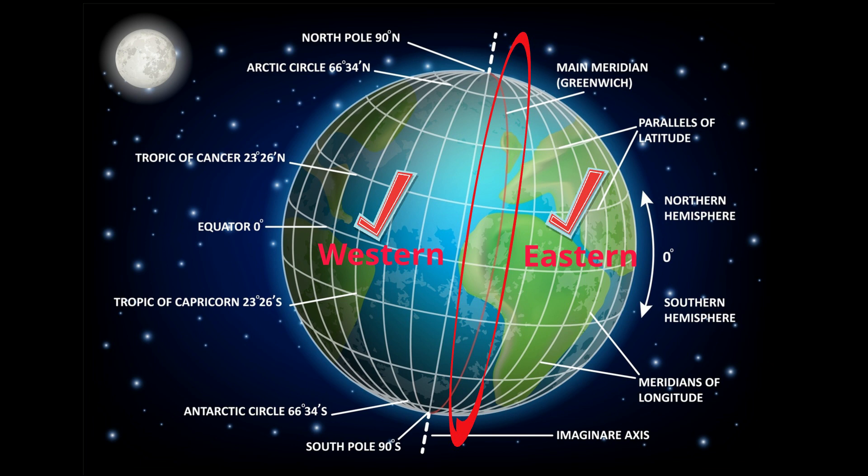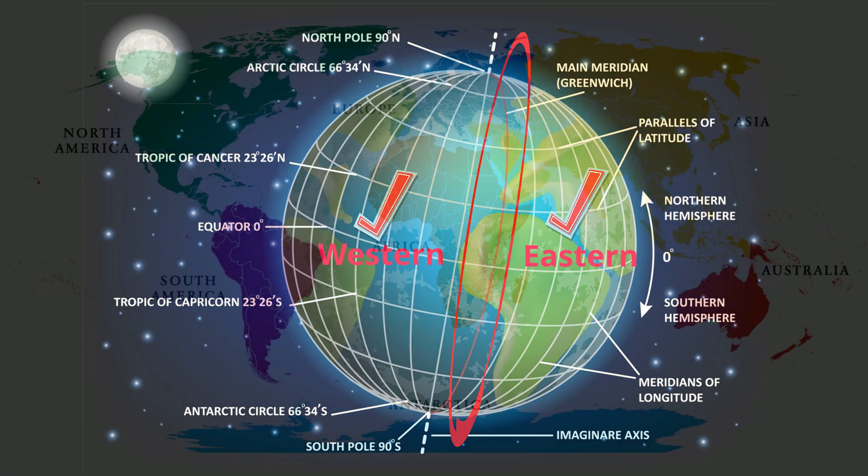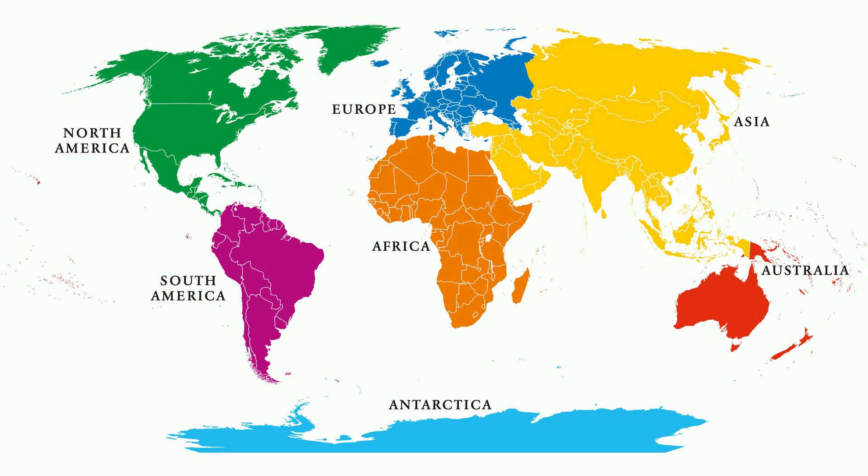Each of the seven continents is located in at least two hemispheres. The seven continents are Europe, Antarctica, Asia, Africa, Australia, North America, and South America.